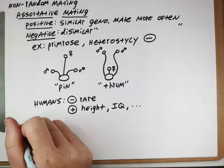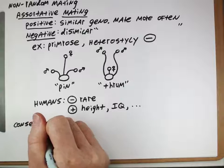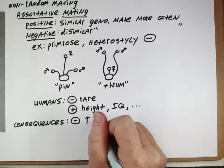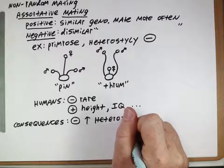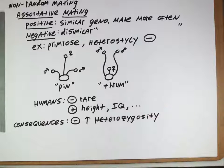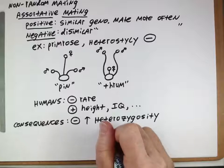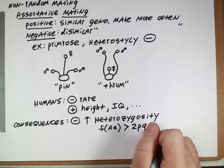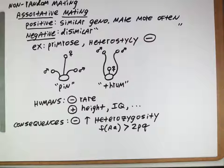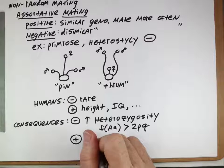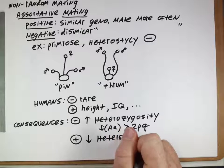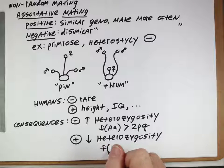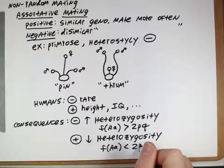What are the consequences of assortative mating? In general, with negative assortative mating, it's going to increase heterozygosity — the proportion of individuals who are heterozygous. The frequency of heterozygous individuals is going to be larger than 2pq, the prediction from Hardy-Weinberg. Positive assortative mating is actually going to reduce heterozygosity and result in a population where the frequency of the heterozygotes is actually less than 2pq.